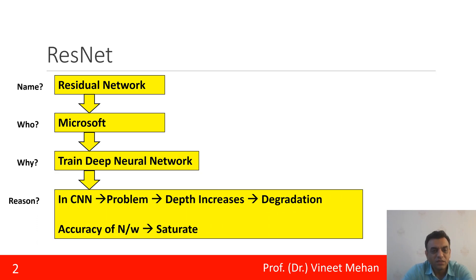What was the reason behind creating ResNet? In CNN there was a problem. The problem was as the depth increases—depth increases means as the number of layers increases in CNN—then there was a degradation of the model.